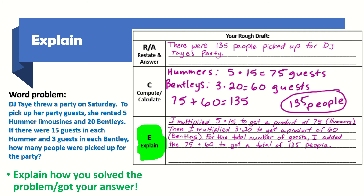I multiplied 5 times 15 to get a product of 75 — that was for the Hummers. Then I multiplied 3 times 20 to get a product of 60 for the Bentleys. For the total number of guests, I added 75 plus 60 to get a total sum of 135 people. So that was my explanation.